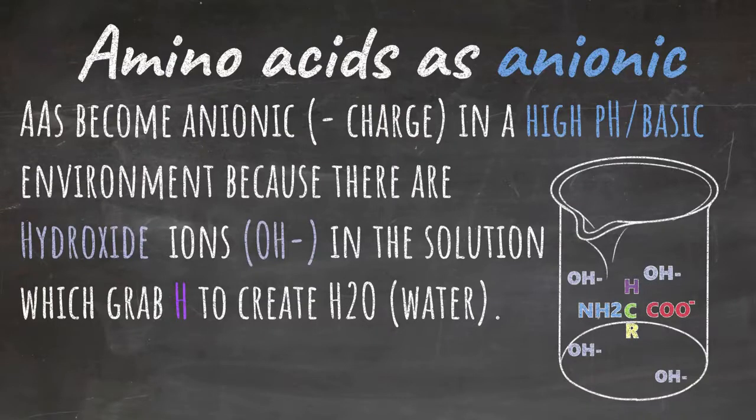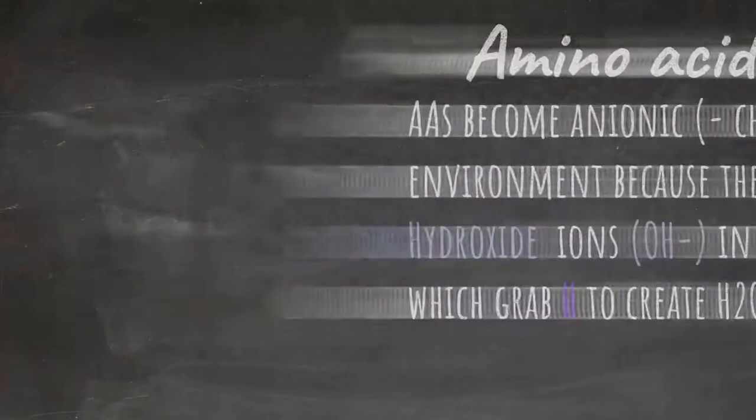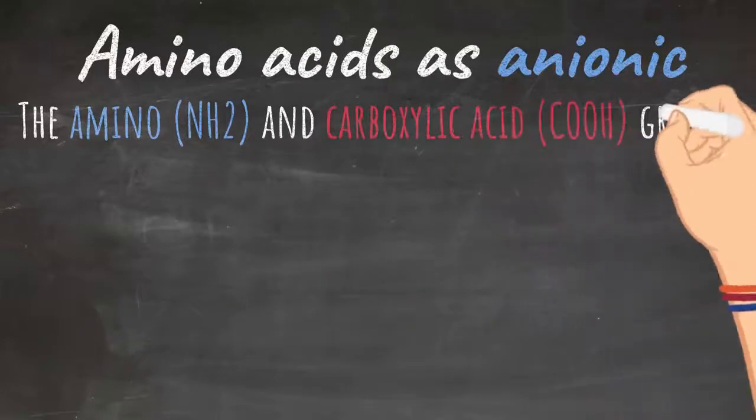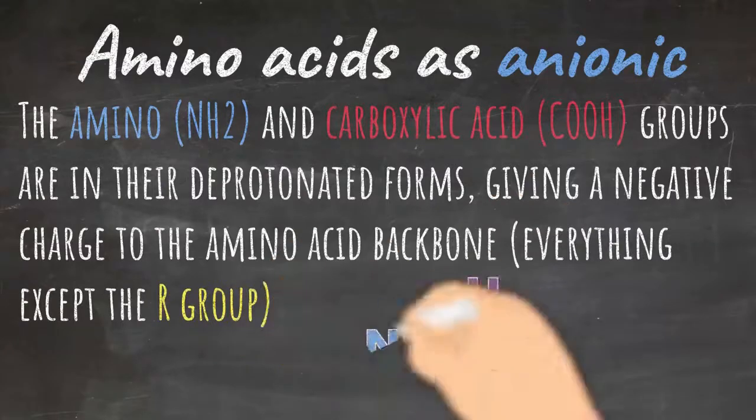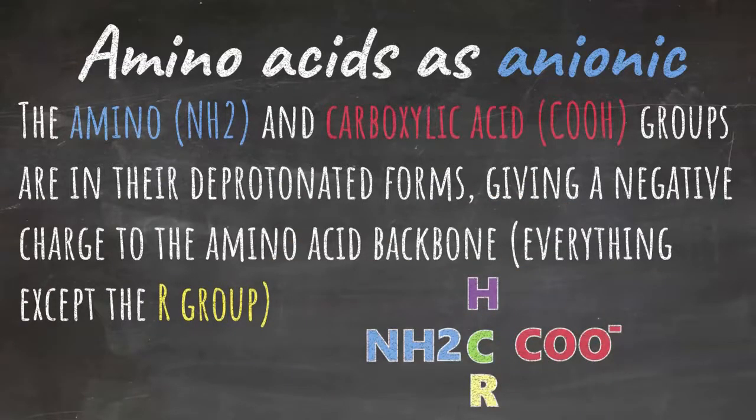As you can see on the right-hand side, there's a picture again of a general amino acid structure with OH in the solution. In the anionic form, the amino acids are in their deprotonated forms, giving a negative charge to the amino acid backbone, everything except for the R group. The amino group is in its neutral form, so it does not have an additional hydrogen added to it. And the carboxylic acid is in a negative form because it has lost its hydrogen.